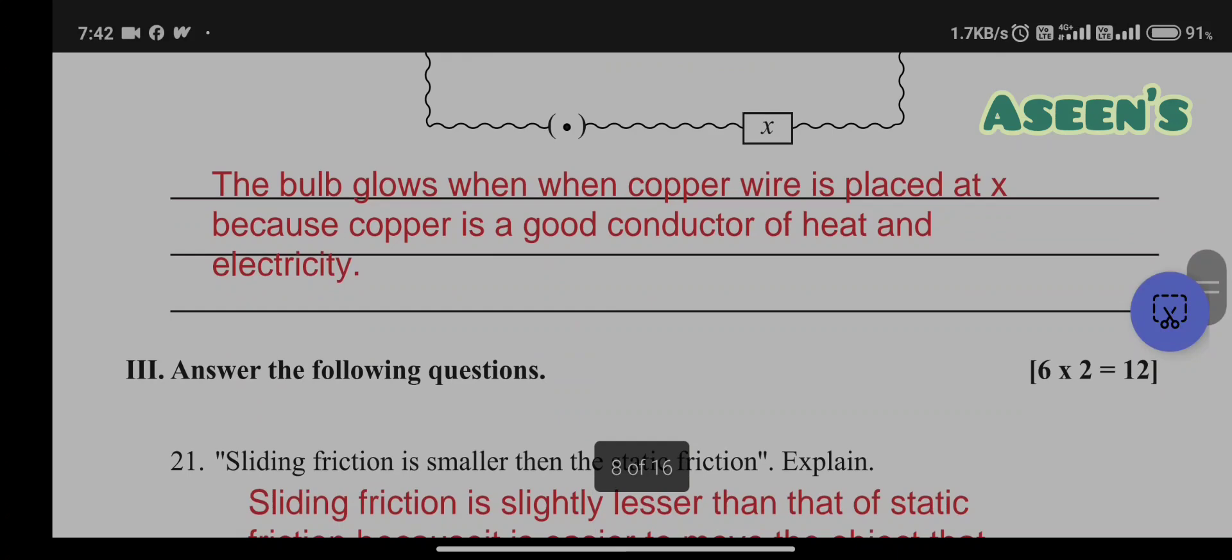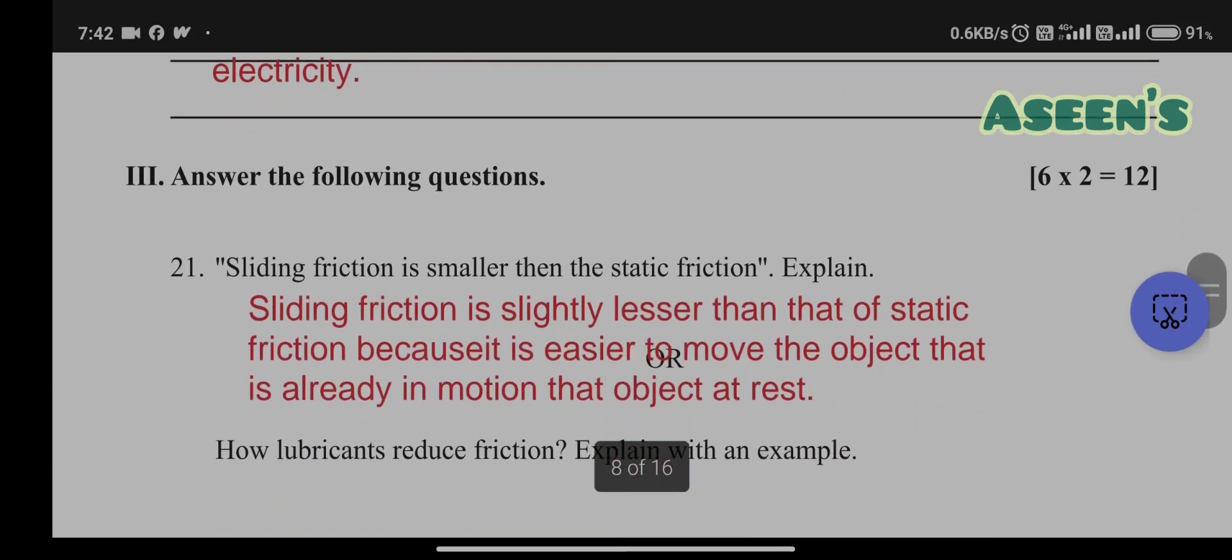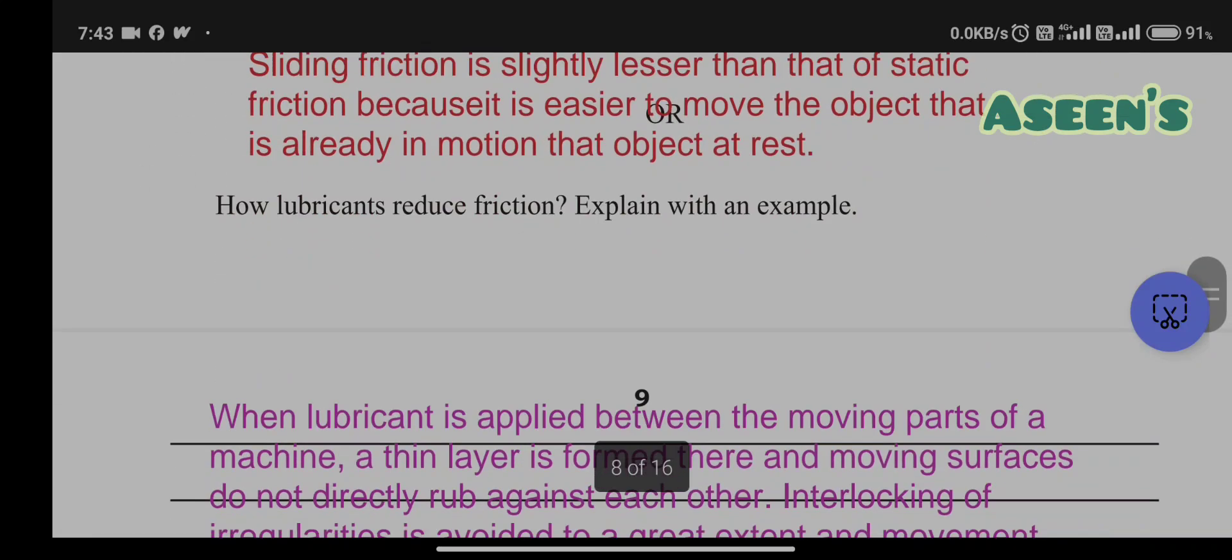These are two more questions. First one: sliding friction is smaller than static friction, explain. This is an OR question, you can opt for this or the next question. Sliding friction is slightly lesser than that of static friction because it is easier to move the object that is already in motion than the object at rest.